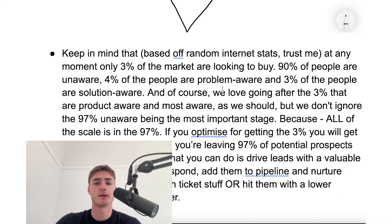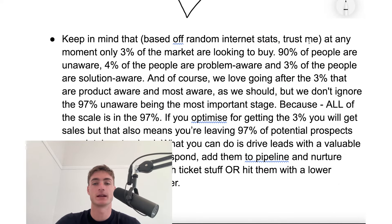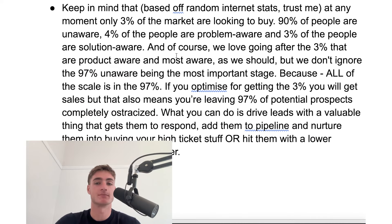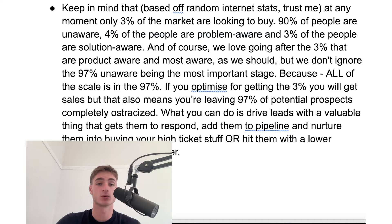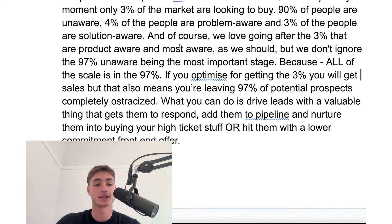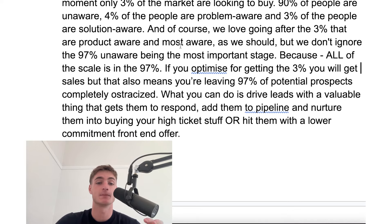You want to keep in mind that based on random internet stats, only 3% of the market are really looking to buy. Then you have about 90% of the people that are unaware, 4% that are problem aware, and 3% that are solution aware. So if you optimize for getting the 3%, you're going to get sales. But that also means you're leaving 97% of potential prospects completely ostracized, which means your campaigns flop and you're basically not going to get that much money back.